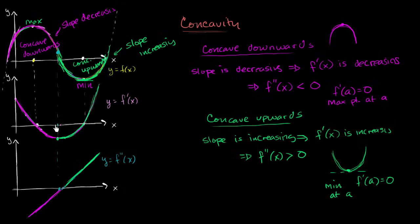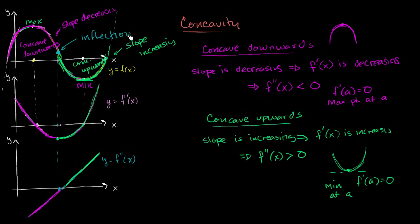So this must have some type of a special name, you're probably thinking, and you'd be thinking correctly. This point at which we transition from being concave downwards to concave upwards, or the point at which our derivative has an extremum point, or the point at which our second derivative switches signs — we call it an inflection point.